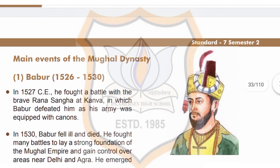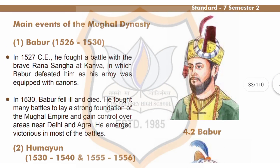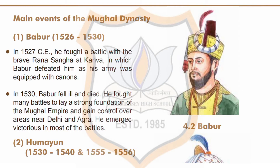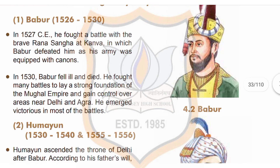Now, the next topic is the main events of the Mughal dynasty. Number one: Babur, period 1526 to 1530. Babur was the founder of the Mughal dynasty in India. He attacked Delhi in 1526 CE and established Mughal rule in India by winning the Battle of Panipat.